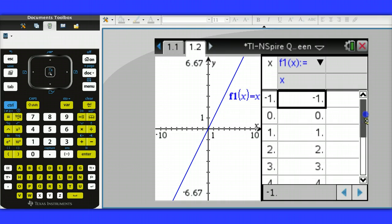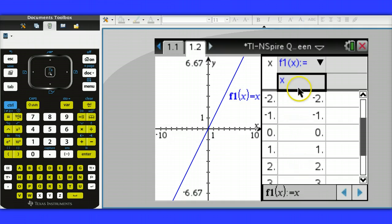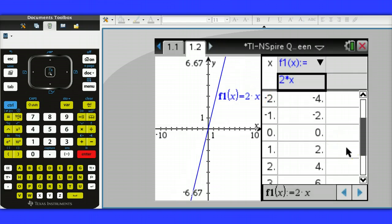We can scroll up and down to view the table. We could change the function right here if we want, just by typing over this, 2, and then x, enter, and we can see that the table changes.